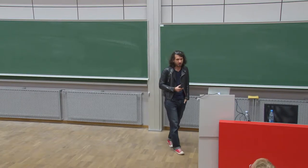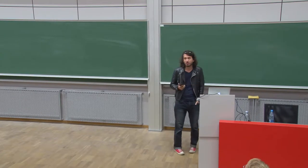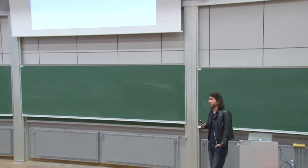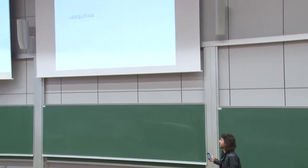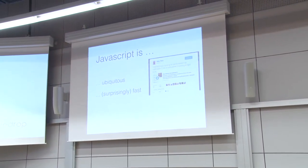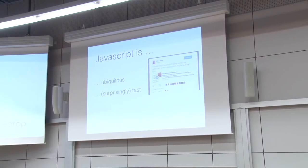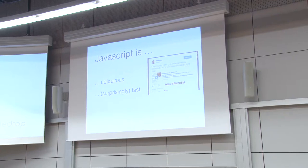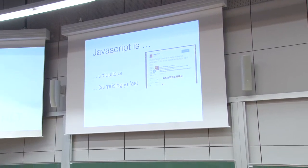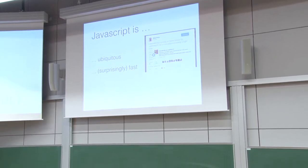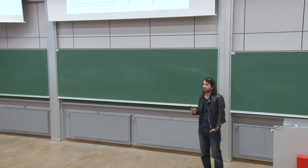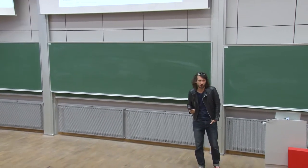There are some things we do need to acknowledge. JavaScript is amazingly ubiquitous — it's basically everywhere. It can also be surprisingly fast, especially with things like V8. And that's already an interesting combination, having something that's ubiquitous and yet fast. But unfortunately, it's also quite shit.